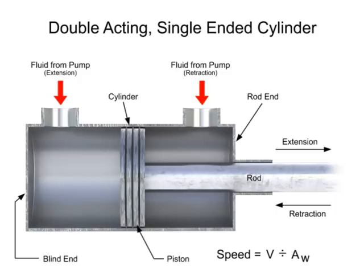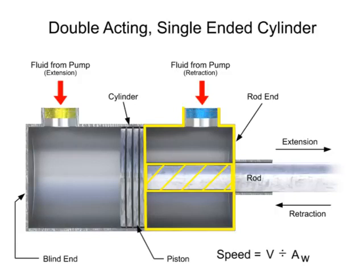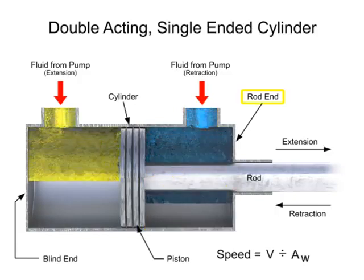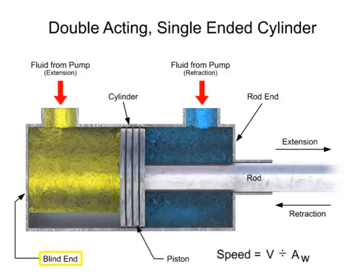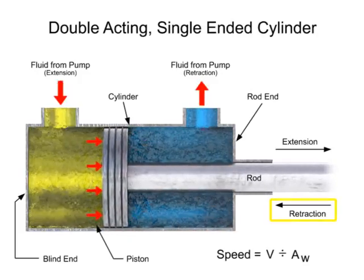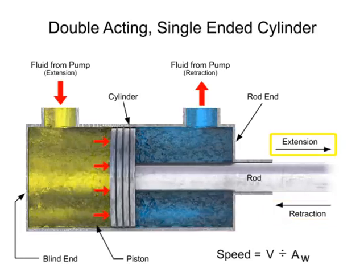Let's assume that the volumetric flow rate is equal for each inlet. Because the rod takes up space within the cylinder, less fluid is required to fill that side. This means that the fluid can fill the rod end side more quickly than it can fill the blind end. Since the rod end side fills with fluid more quickly, the cylinder will always retract faster than it can extend.